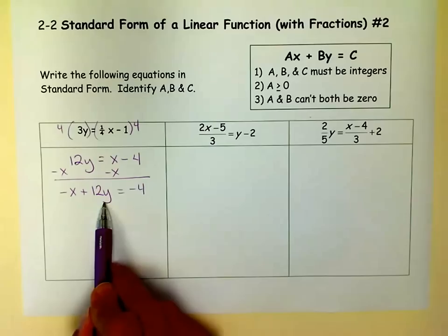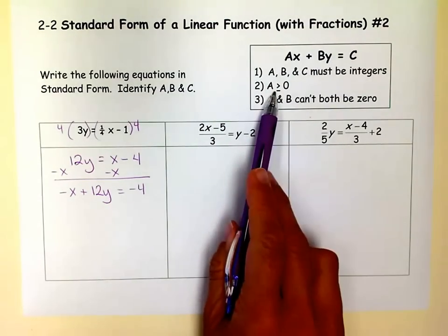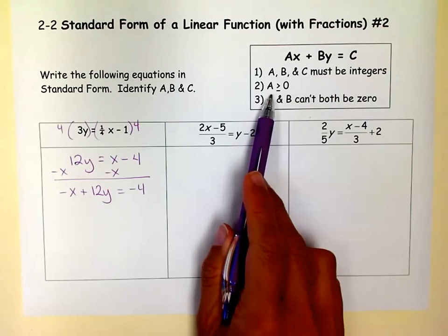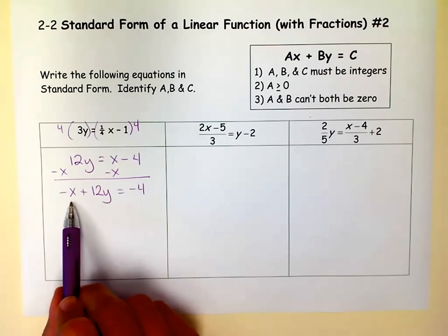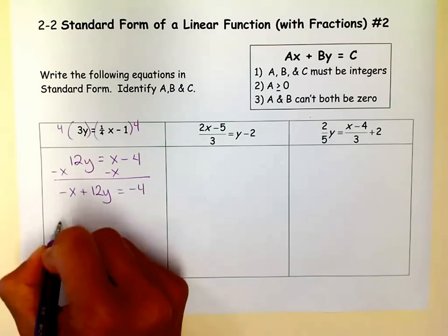So now I've got x and y on the same side, all of them are integers, but my problem is step number 2 over here, A is not positive, it's negative. So I need to get rid of that little negative sign.